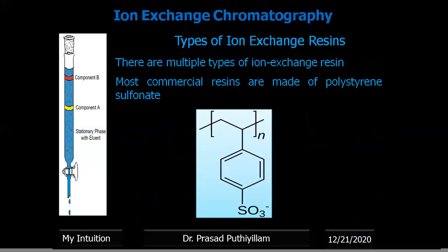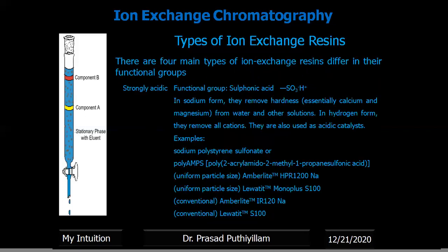There are multiple types of ion exchange resins, but the most common commercial resins are made of polystyrene sulfonate. This is a polymer in which the benzene ring with SO₃⁻ group repeats n times, forming a very long chain polymer. There are mainly four types of ion exchange resins that differ in their functional group: strongly acidic, strongly basic, weakly acidic, and weakly basic ion exchange resins.